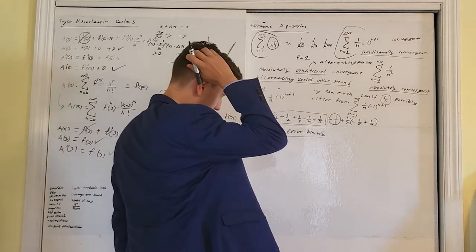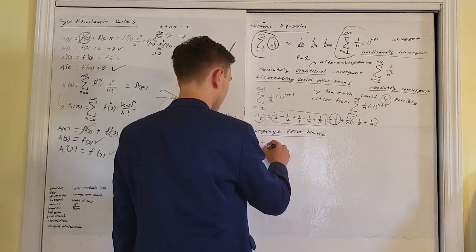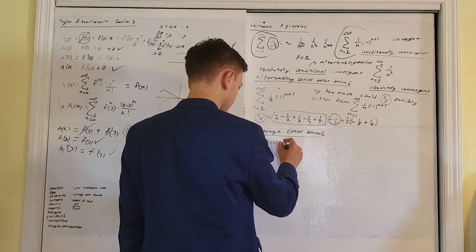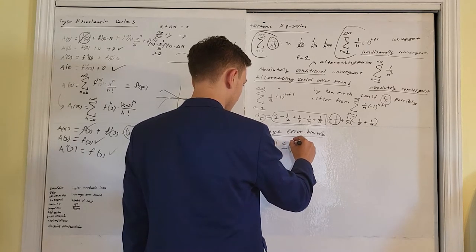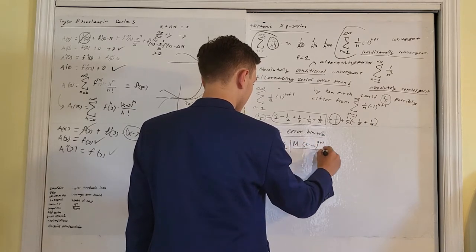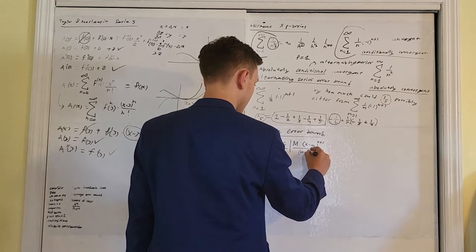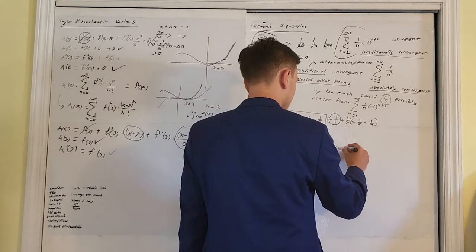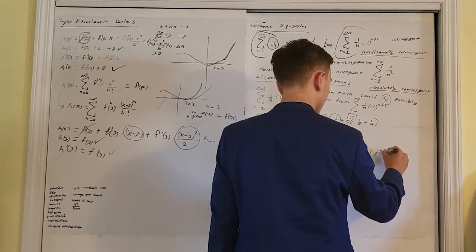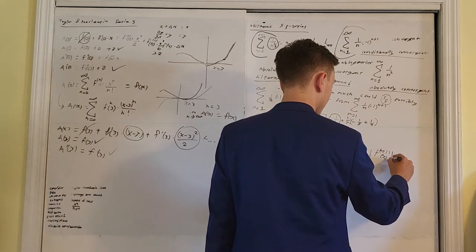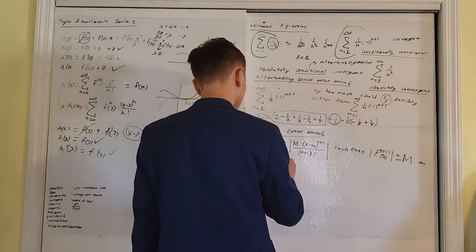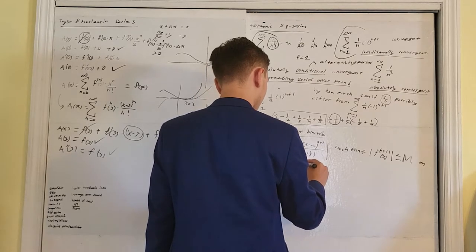The remainder function — our approximation function of an nth degree polynomial of x — has absolute value less than or equal to the absolute value of M times (x−a)^(n+1) over (n+1)!, such that the absolute value of the (n+1)th derivative of f(x) is bounded at or below the value M on the interval from a to x.